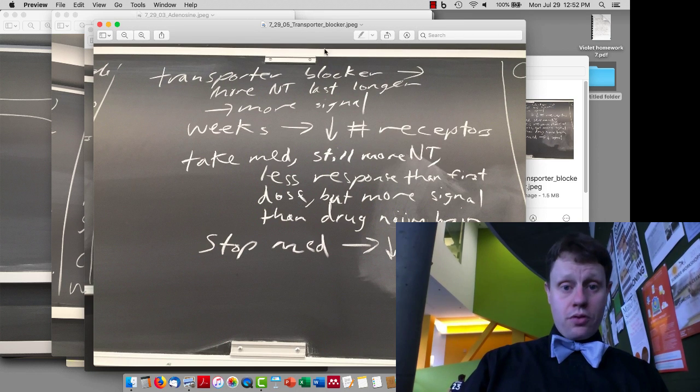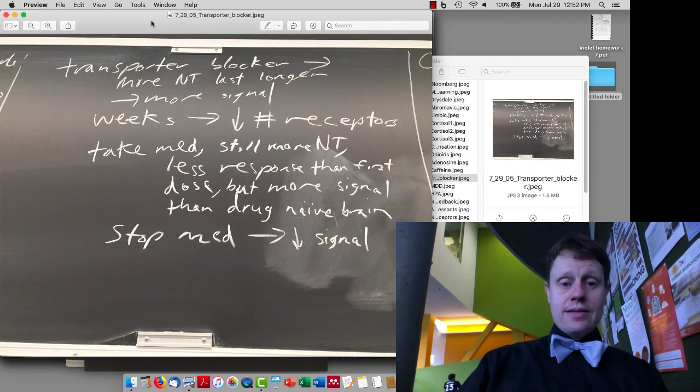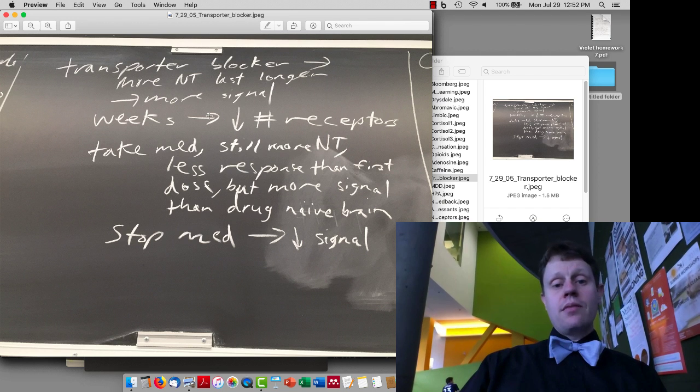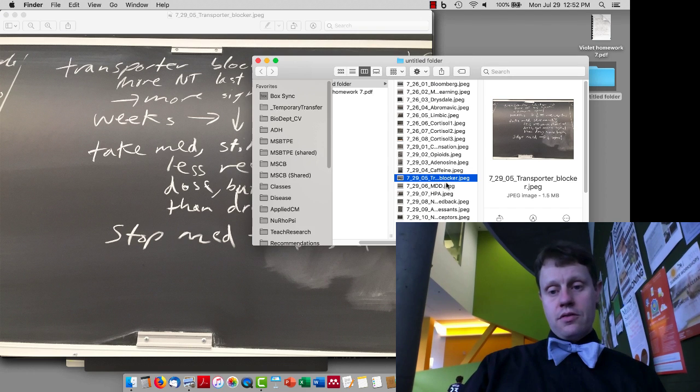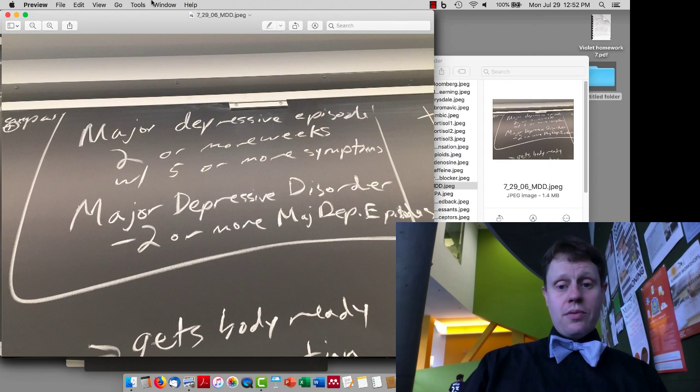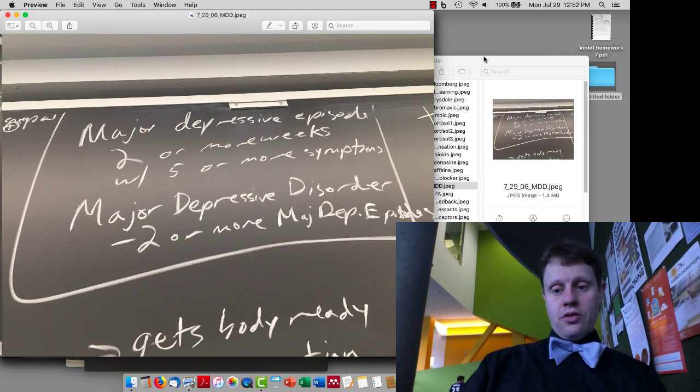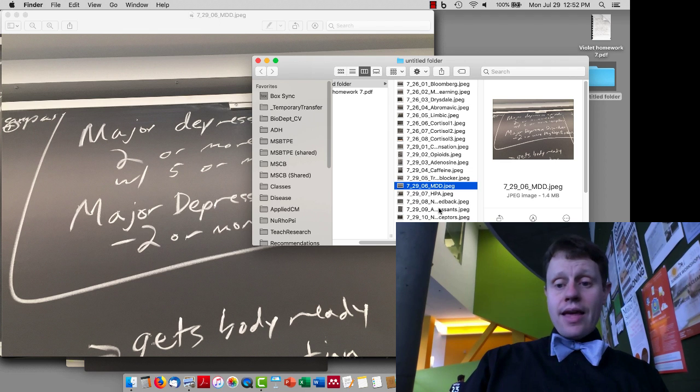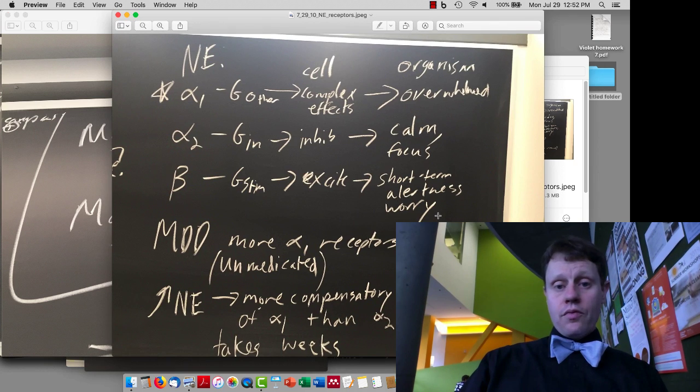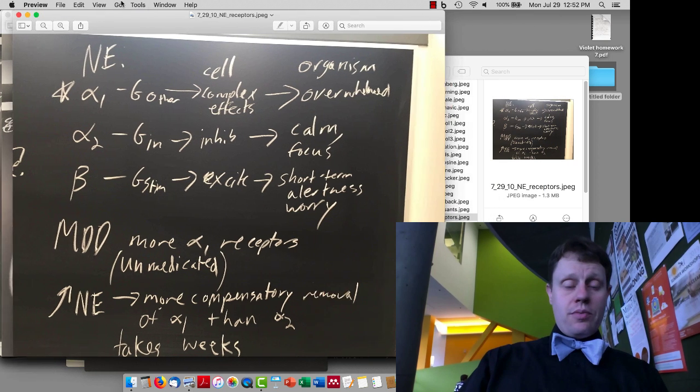We also discussed how transporter blockers are similar to agonists in that they're not stimulating the receptor directly, but instead there's getting more neurotransmitter, which is then going to mean more signal, which then the cell will respond to by removing, again, receptors. We also briefly discussed the definition of major depressive episodes and a major depressive disorder, which is just two or more major depressive episodes. And then talked about norepinephrine receptors in major depressive disorders.